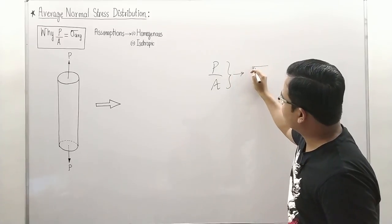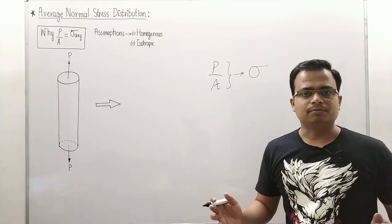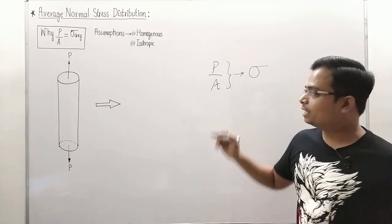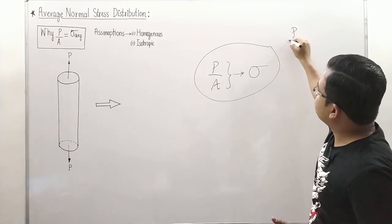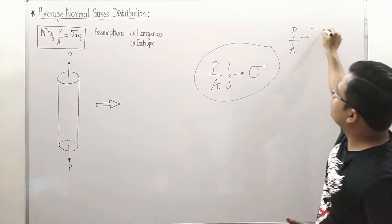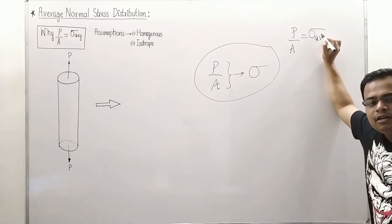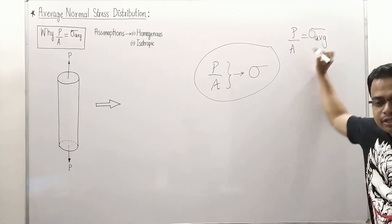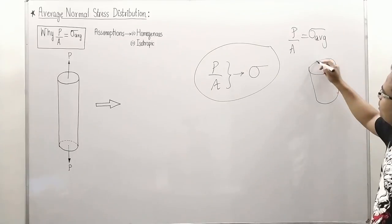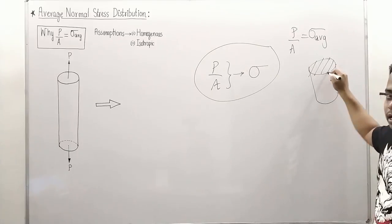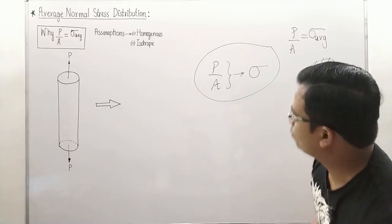What you generally tend to write is that the ratio of P over A is simply sigma. Well, that's not completely true. What's true is that P by A is actually equal to the averaged value of normal stress over a cross-section. And I'll prove to you why this is the average value over a cross-section.